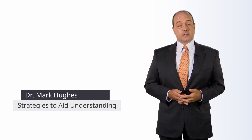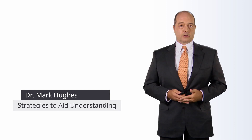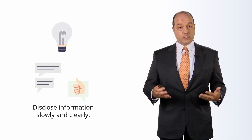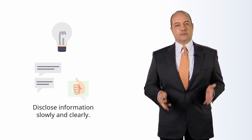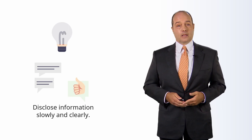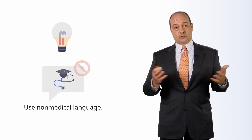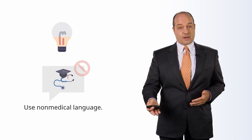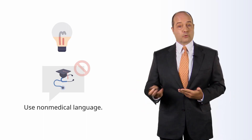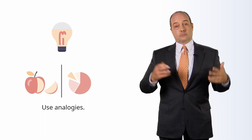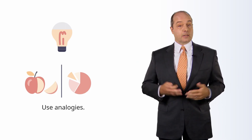After disclosing information, it's really important to assess comprehension. The way you disclose information will influence the patient's ability to understand it. Go through it slowly and clearly — don't rush through risks, benefits, and alternatives. Give enough time so the patient can hear and process the information. Use non-medical language; if you do use medical terminology, define the term. If the patient has used their own terms to describe their condition, use those, because that reinforces their understanding.